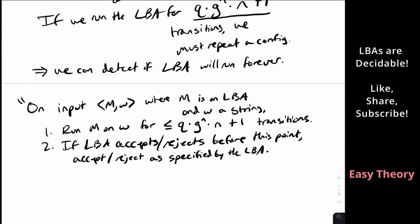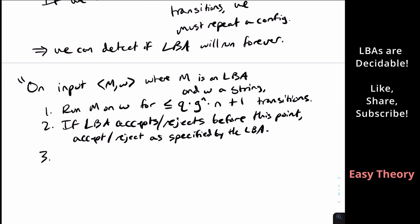So if we didn't detect that it ran forever, then we'll just output whatever answer the LBA said. But if we have detected it'll run forever, which means it hasn't said accept or reject by this number of transitions, then that means that the machine will never accept the input because it'll just run forever. So otherwise, and to clarify here, the LBA will run forever. We must reject at that point, because rejecting means that the LBA will not accept input w because we detected it will run forever.